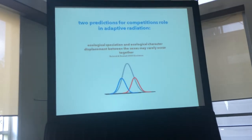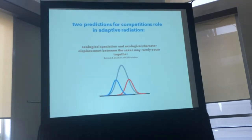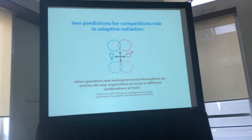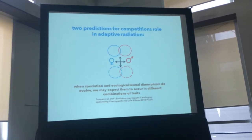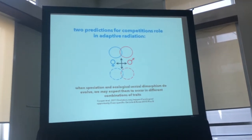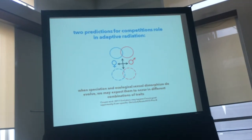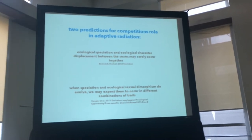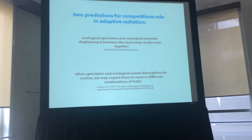Alternatively, some more recent theory treats this as a multivariate model. If we imagine that selection is multivariate — that there is more than one dimension of resource competition and disruptive selection — we can actually get both speciation and ecological sexual dimorphism evolving at the same time, but with the explicit prediction that they occur in different directions. Phenotypic divergence between species would be predicted to happen independently of, or in different combinations of traits from, phenotypic divergence between the sexes.